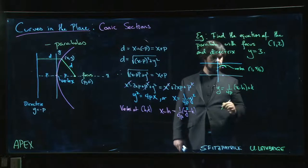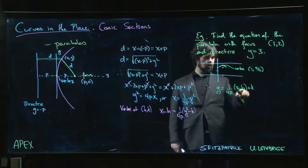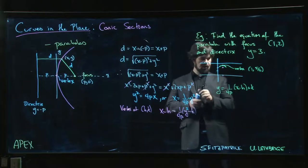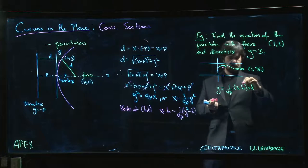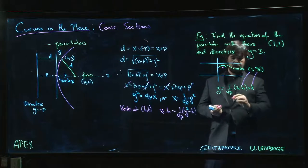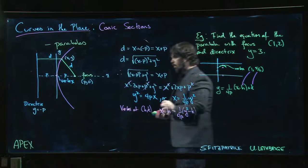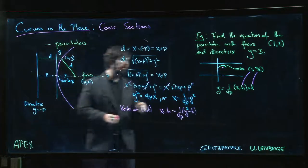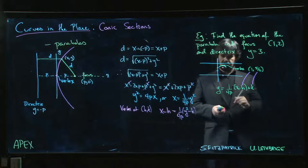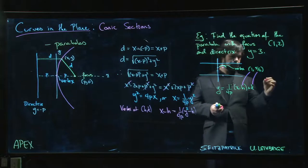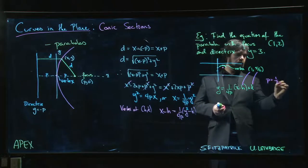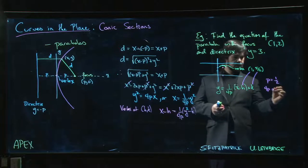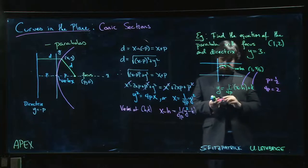Where h and k are the coordinates of the vertex, so we have those. Here's h, here's k. What's p? P is the distance between the vertex and the focus. What is that distance? One half. P is one half, so 4p is going to be 2.